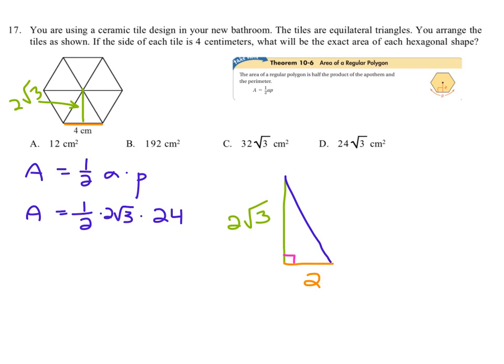And then if we say, okay, what's one half of two root three? That is one root three, or just root three. Root three times twenty-four. Twenty-four root three.